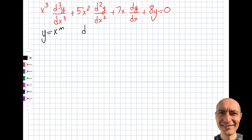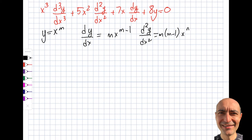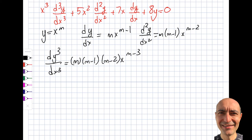I have y is equal to x to the power of m, and I do dy/dx is equal to m·x^(m−1). Then d²y/dx² will be m(m−1)·x^(m−2), and now one more: d³y/dx³ will be m(m−1)(m−2)·x^(m−3).